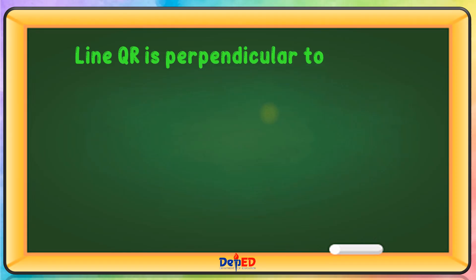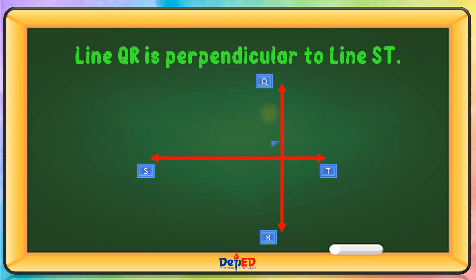Line QR is perpendicular to line ST. They make a 90-degree angle.